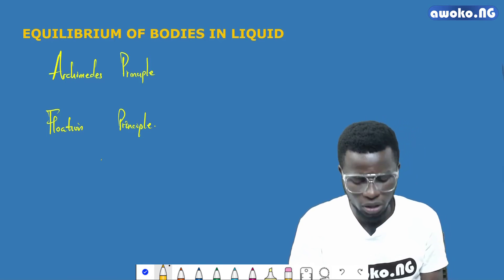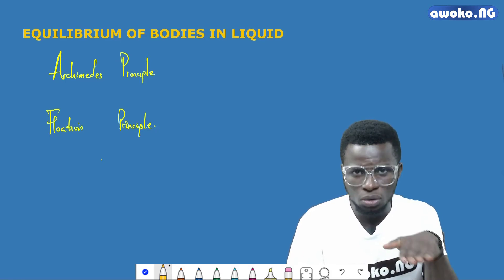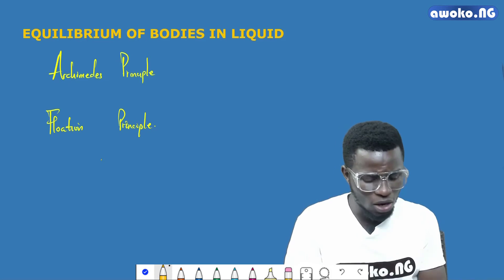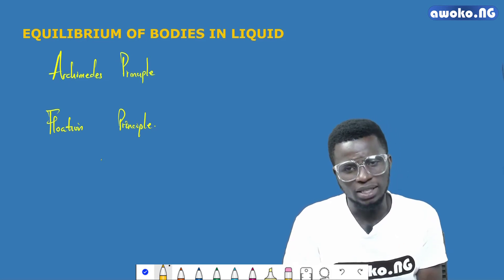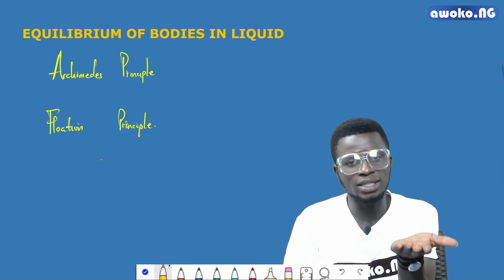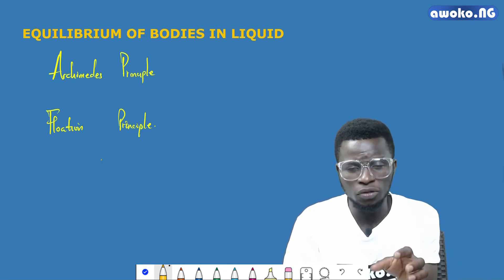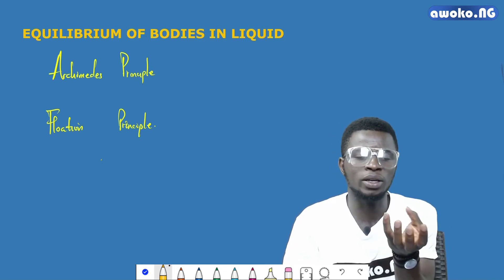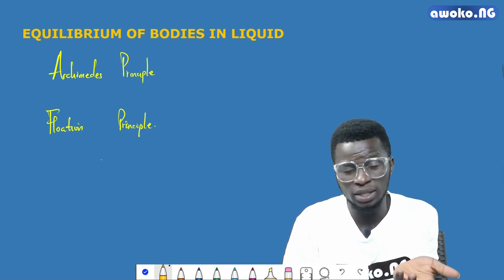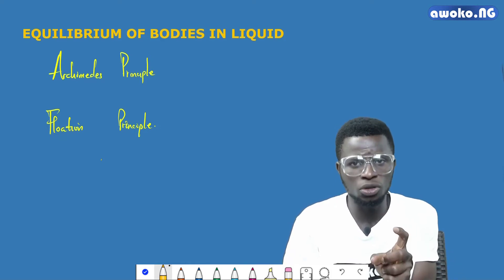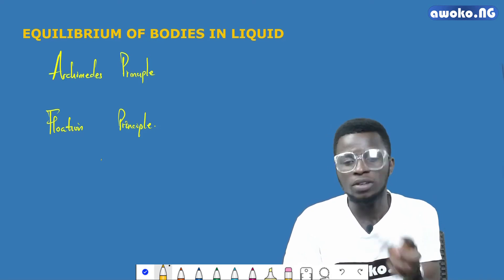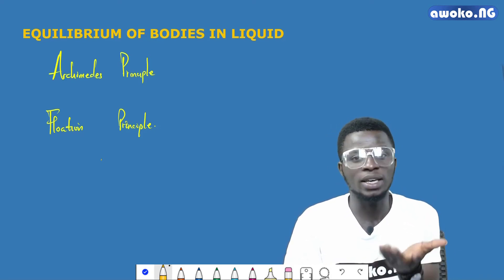The principle of flotation, on the other hand, states that an object will float when the upthrust exerted upon it by the fluid is equal to the weight of the object. So a body will definitely float when the upthrust exerted upon it by the fluid equals its weight. For instance, if you put a leather ball on the surface of water, it floats because the upthrust exerted on that ball is equal to the weight of the ball itself.